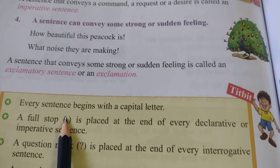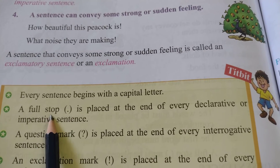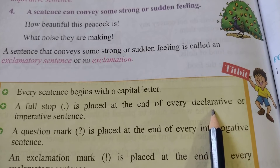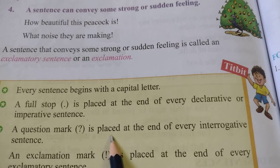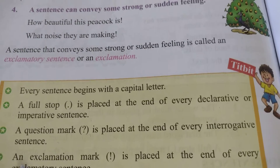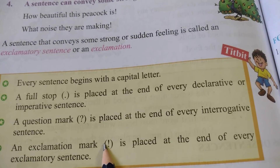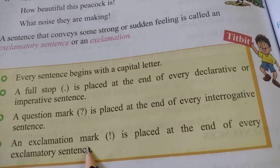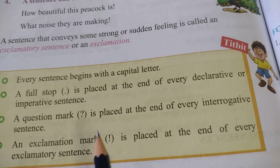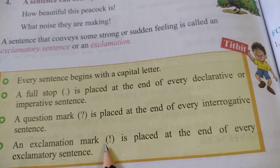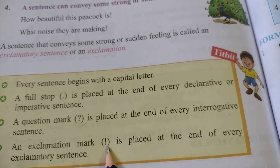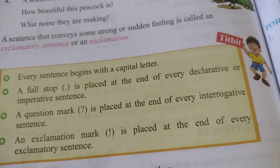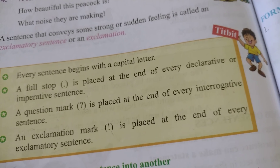Okay children, these are the points which have to be remembered. Every sentence begins with a capital letter. A full stop is placed at the end of every declarative or imperative sentence. A question mark is placed at the end of every interrogative sentence. An exclamation mark is placed at the end of every exclamatory sentence. These are the points to identify which is an exclamatory, imperative, or interrogative sentence — remember these in your mind. I will follow in the next video.